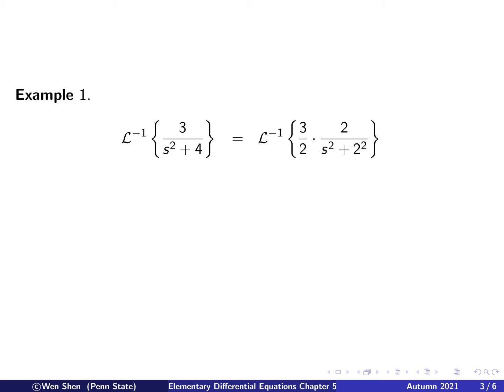In order to match it to be the sine function, then I need s² + 2², and then I need 2 on the numerator. But I have 3 on the numerator. Then I need to multiply the whole thing by a factor 3/2. Then this equals to that. Because here then 2 will cancel 2, I'll just end up with 3.